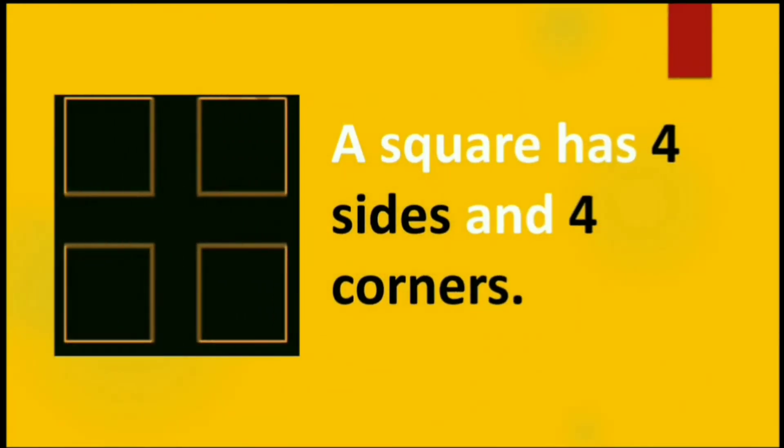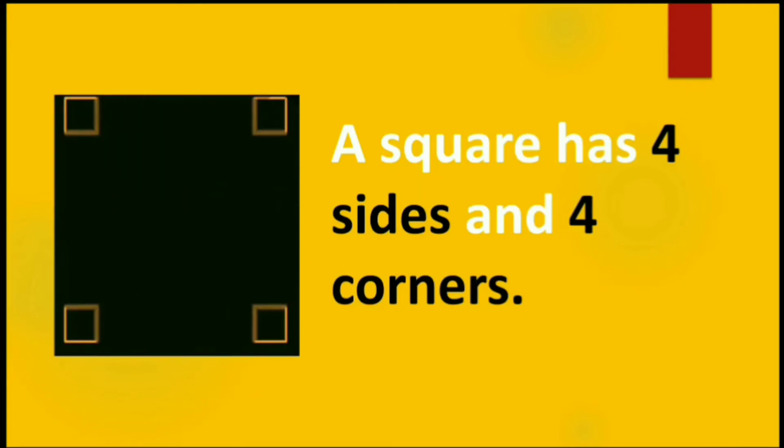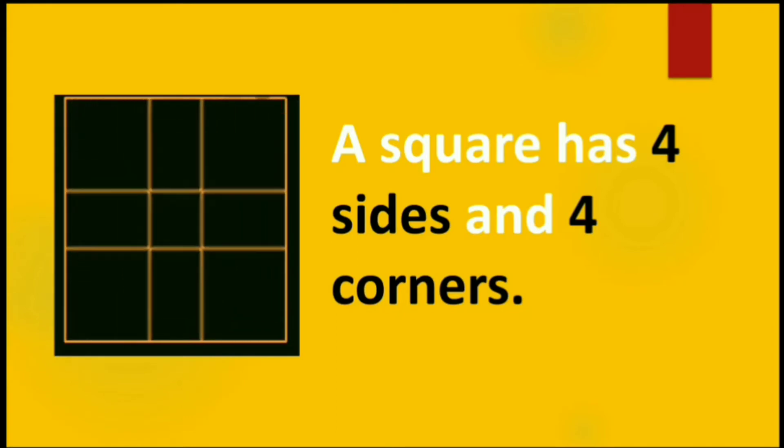Children, a square, triangle and rectangle has sides and corners as per their shapes. Now this is a square. A square has 4 sides and 4 corners.